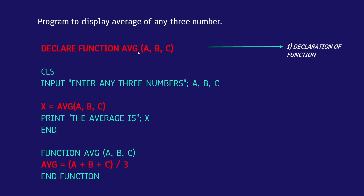In the bracket you can see a, b, c — these are called parameters. Parameters mean what is needed for this function. We need to calculate average of three numbers, so we need three numbers. I have written a, b, c as three variables which will store three values to calculate the average. So this completes the declaration.